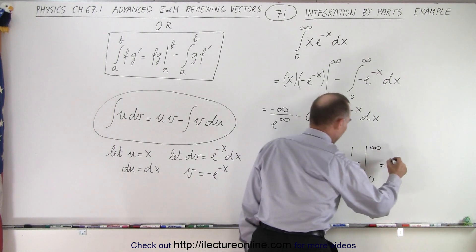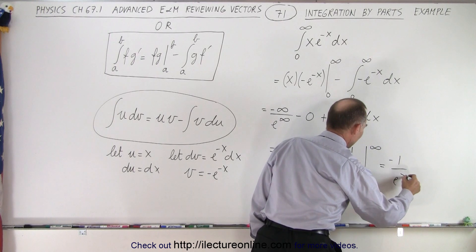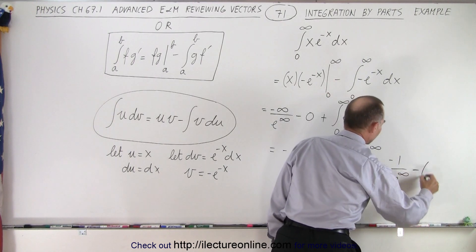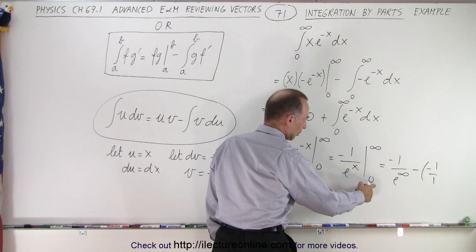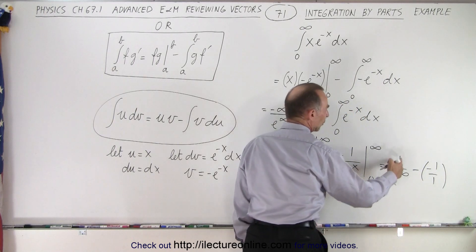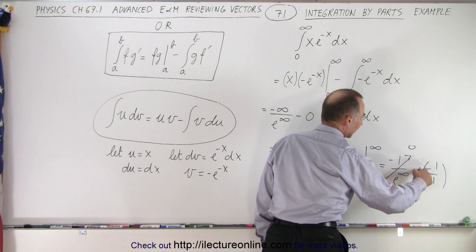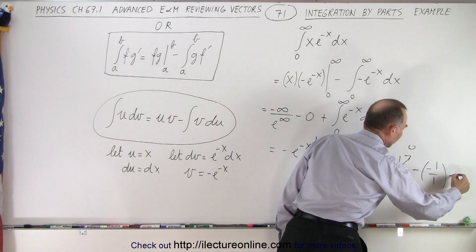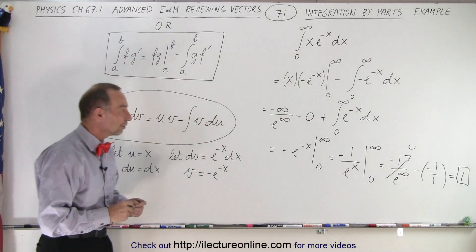which is equal to minus 1 divided by e to the infinity minus a minus 1 over 1. The reason why I get that is when I plug in the lower limit, e to the 0 is 1. And so notice that 1 over e to infinity, that simply becomes 0. And minus times and minus becomes plus. So this is equal to simply plus 1 when we finally evaluate that integral.